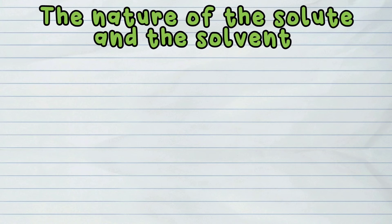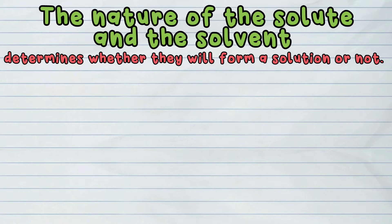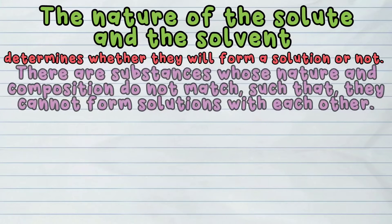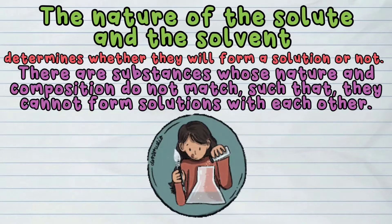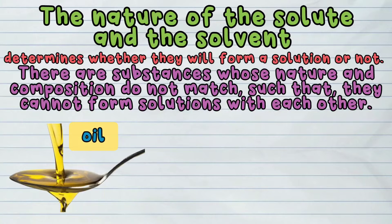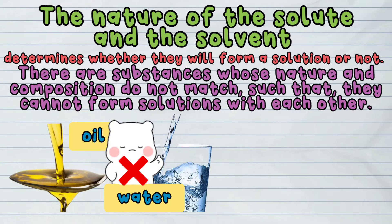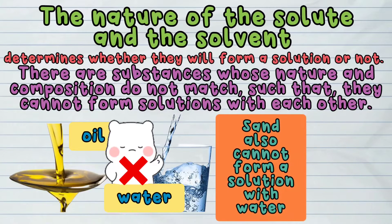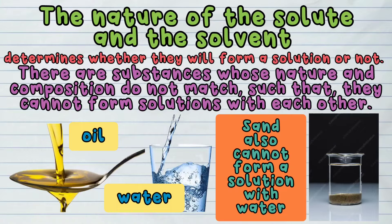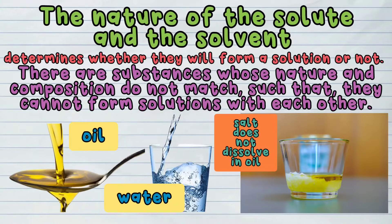The nature of the solute and the solvent determines whether they will form a solution or not. There are substances whose nature and composition do not match such that they cannot form solutions with each other. For example, oil and water have very different natures, so they do not mix with each other. Sand also cannot form a solution with water. In the same way, salt does not dissolve in oil.